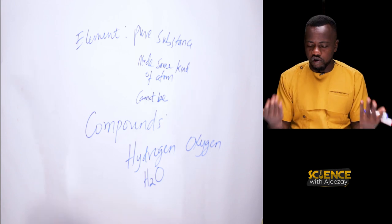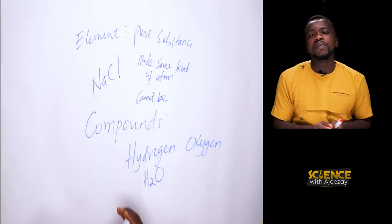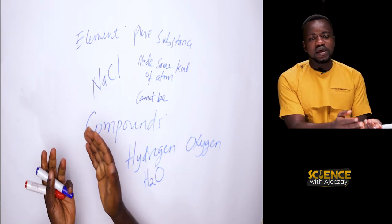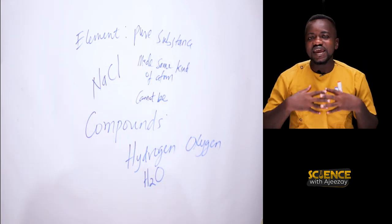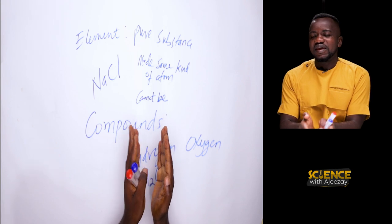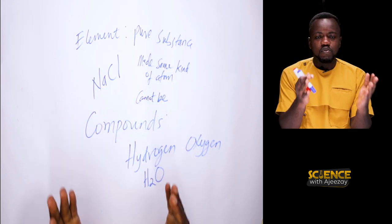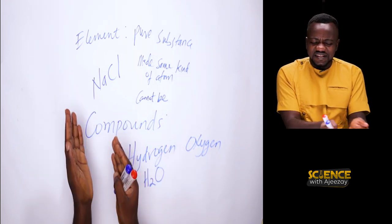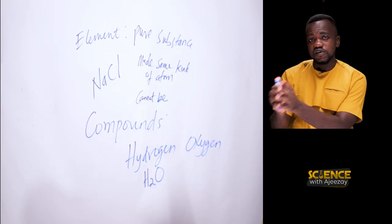We can take another example: sodium chloride, which is a compound — this is the common salt we eat at our homes. Sodium is a metal and chlorine is a gas. They come together chemically and form sodium chloride, which is a solid. So you see, the product doesn't look like the individual elements. Sodium is a solid metal and chlorine is a gas, but when you combine them chemically you have sodium chloride — a solid salt.